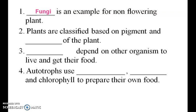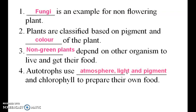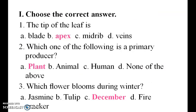Second one: plants are classified based on pigment and color of the plant. Third one: non-green plants depend on other organisms to live and get their food. Fourth one: autotrophs use atmosphere, light, and chlorophyll to prepare their own food.